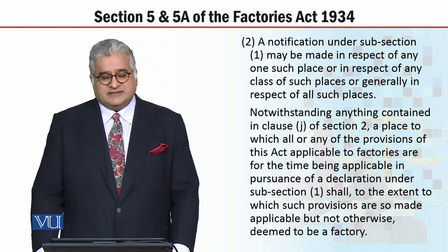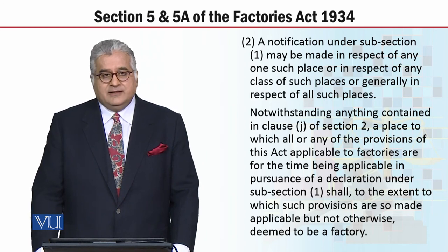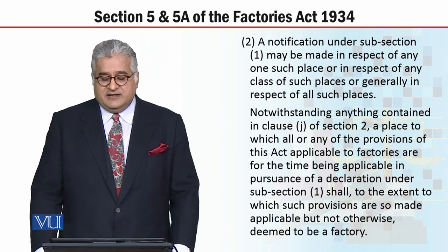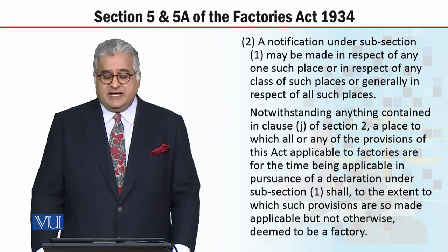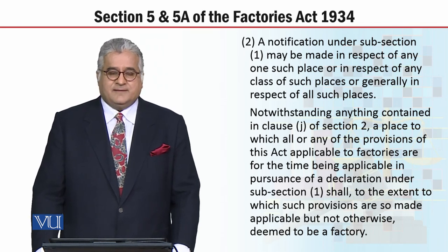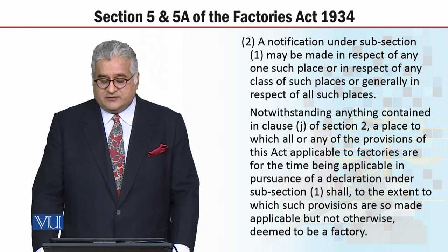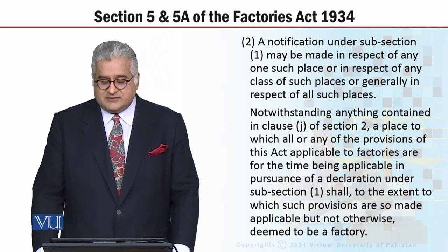Section 5, subsection 2 states: a notification under subsection 1 may be made in respect of any one such place, or in respect of any class of such places, or generally in respect of all such places, notwithstanding anything contained in clause J of section 2. This means that regardless of what clause J of section 2 states, a place to which all or any of the provisions of this act applicable to factories are, for the time being, applicable in pursuance of a declaration under subsection 1 shall, to the extent to which provisions are so made applicable but not otherwise, be deemed to be a factory.